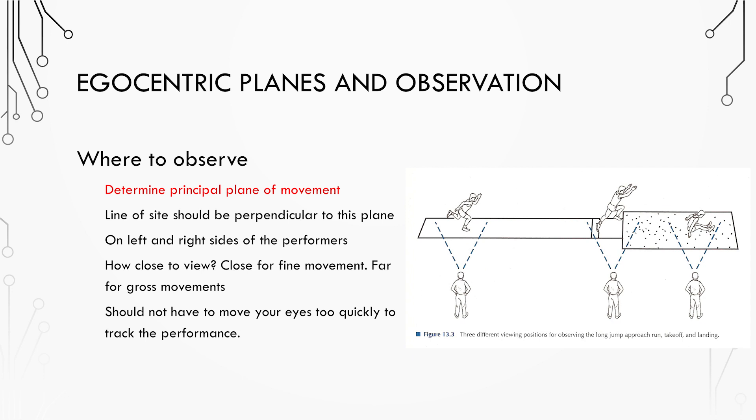First, determine the principal plane of movement or the plane that captures the most important feature of the skill. Make sure you have a camera optimized for that plane, meaning that the line of sight is perpendicular to the plane of movement. Then set up other cameras to view the secondary plane of movement.